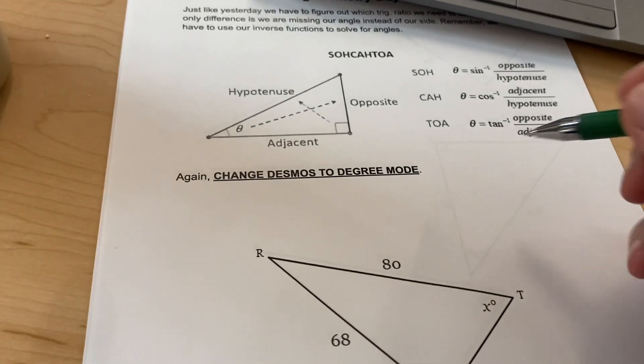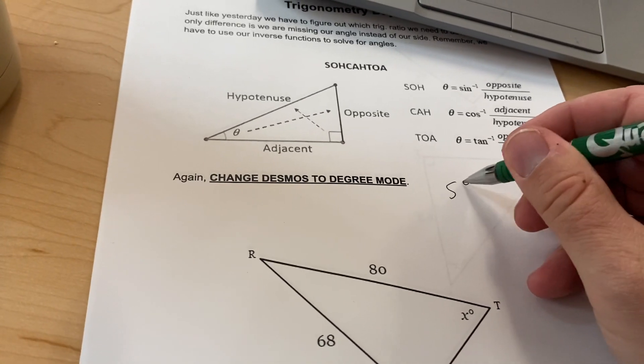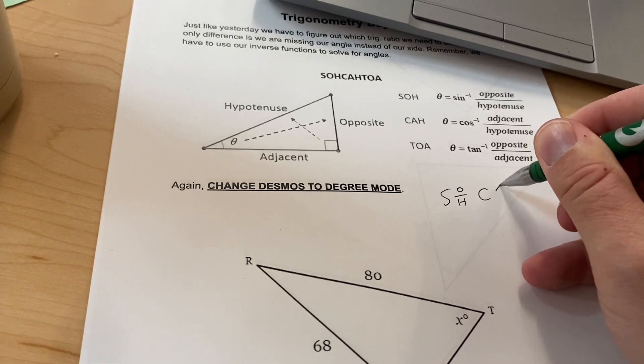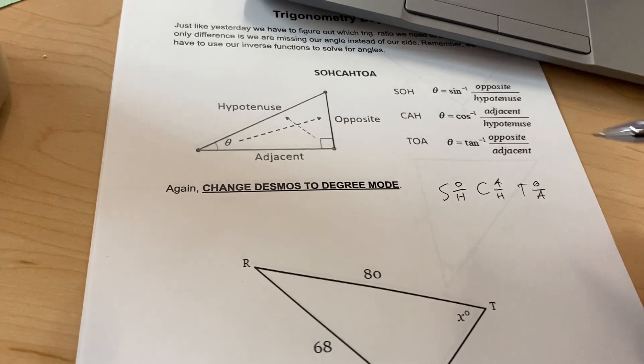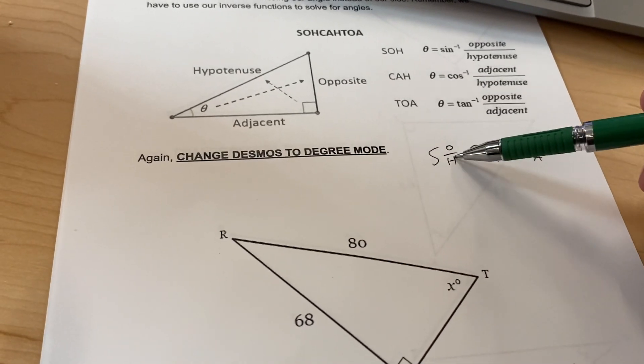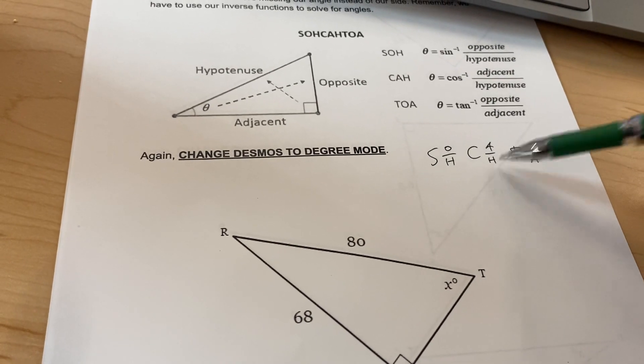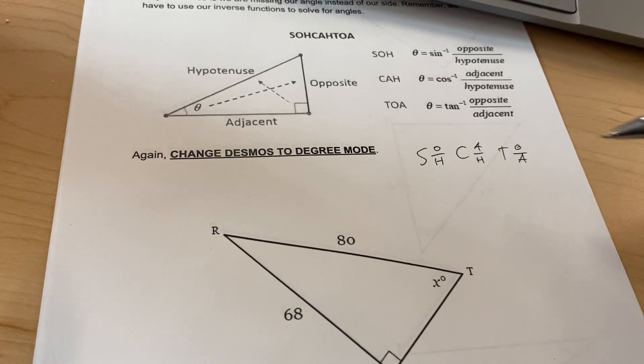SOHCAHTOA is written up here. I usually write it like this so that I remember: sine is opposite over hypotenuse, cosine is adjacent over hypotenuse, and tangent is opposite over adjacent.